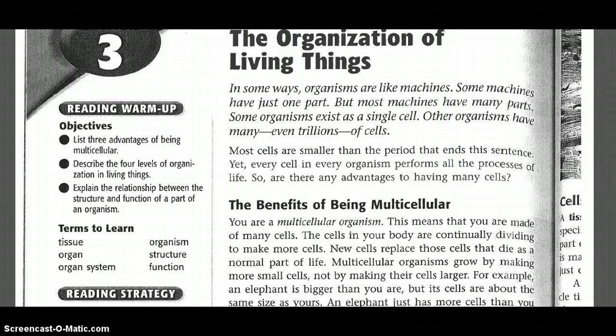In some ways, organisms are like machines. Some machines have just one part, but most machines have many parts. Some organisms exist as a single cell. Other organisms have many, even trillions of cells. Most cells are smaller than the period that ends this sentence. Yet every cell and every organism performs all the processes of life. So, are there any advantages to having many cells?